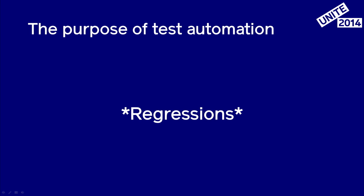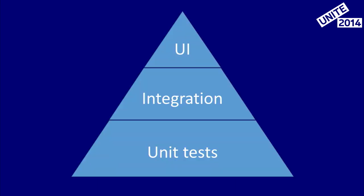The main purpose of this automation is to find those regressions. In testing, in test automation, there is this concept of the test pyramid. It looks more or less like that. On the bottom of it you have low-level tests, called also unit tests; on top of them there are integration tests; and at the top there are UI tests.